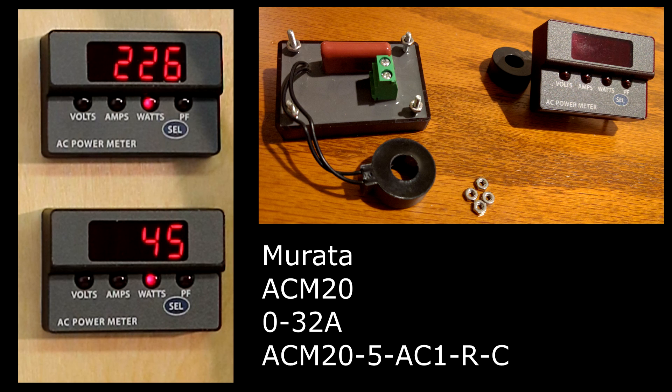These meters are produced by Murata and consist of a panel interface with a selection button. On the back, there is a current transformer and screw terminals to attach to the mains. Current is measured by induction from a wire that passes through the current transformer, while voltage is measured at the screw terminals. A microprocessor inside of the power meter is taken into consideration the phase difference between the voltage and current waveforms. From this, it's able to measure watts and power factor.